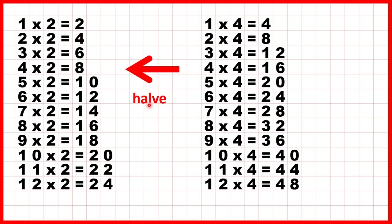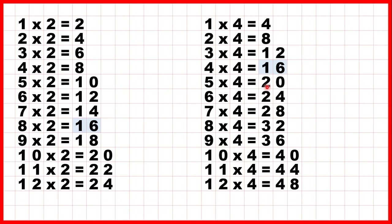Remember, to halve — or to find half of — a number, we divide it by 2. So 4 divided by 2 is 2, 8 divided by 2 is 4, 12 divided by 2 is 6, and so on. That's why 1 times 4 gives the same answer as 2 times 2; 2 times 4 is the same as 4 times 2; 3 times 4 is the same as 6 times 2; 4 times 4 is the same as 8 times 2; 5 times 4 is the same as 10 times 2; and 6 times 4 is the same as 12 times 2. All other multiples of 4 would also appear in the 2 times table if we carried on past 12 times 2.